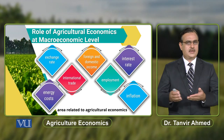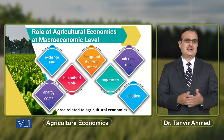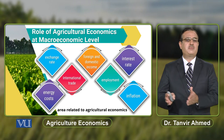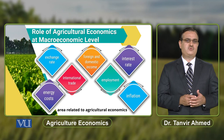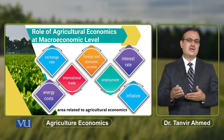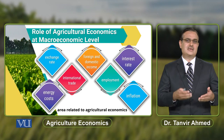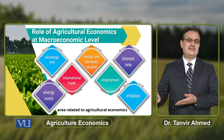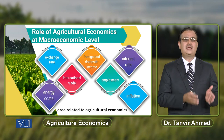Phir isi pattern pe, ek aur badi cheez observe ki thi — kya agricultural sector, agar jo bhi aapke paas agriculture sector hai, it is a significant sector that provides employment to a large portion of the labor force. Agar aapke paas agricultural sector better perform na kere, there is a decrease in employment in the agricultural sector. Aur jab agricultural sector mein employment absorption kam hogi, then there is an increase in unemployment rate in the economy.